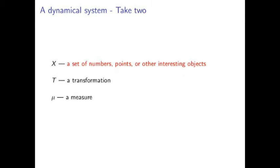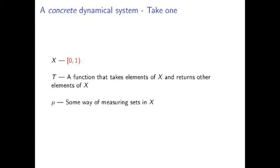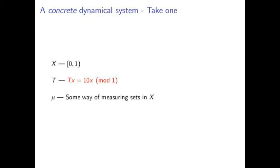More concretely, a space is a set of numbers, points, or some other kind of interesting objects. A transformation is a function which takes one of those objects and returns another object from the same space. And a measure is really just some way of measuring the size of sets within our space. For our concrete example, we'll take the space as being the interval [0,1), our transformation as being 10x mod 1, and our measure as being Lebesgue measure.